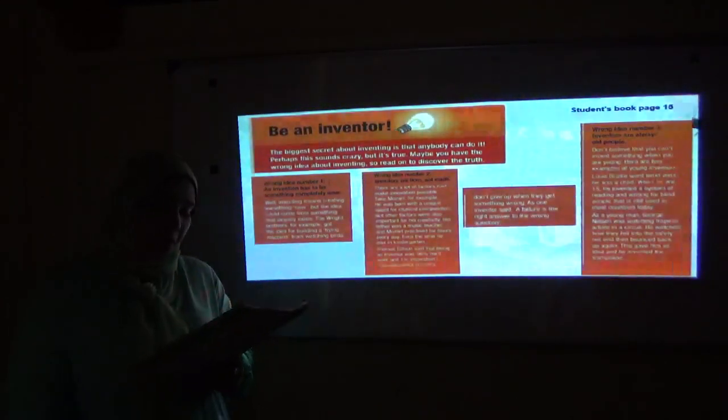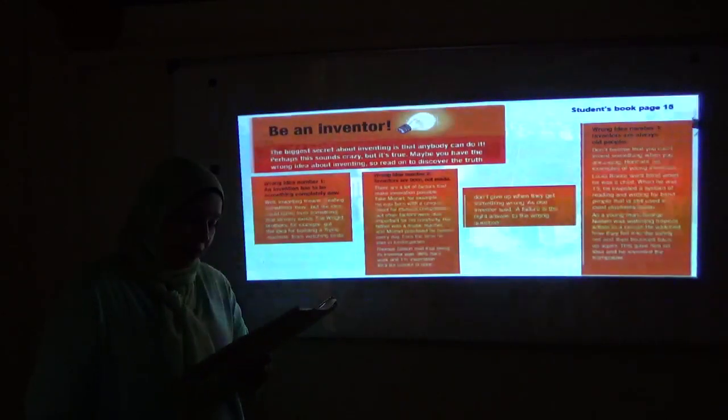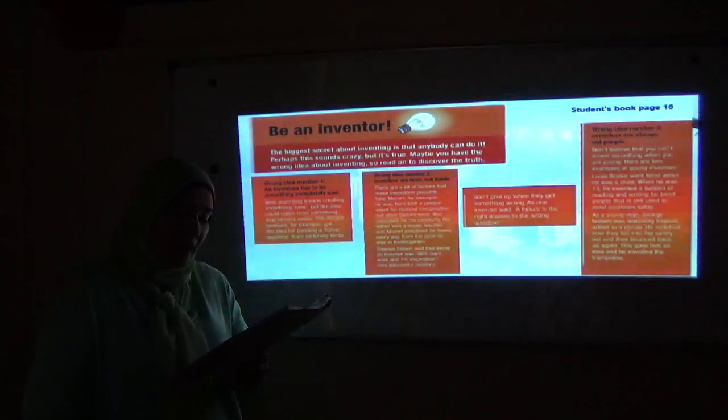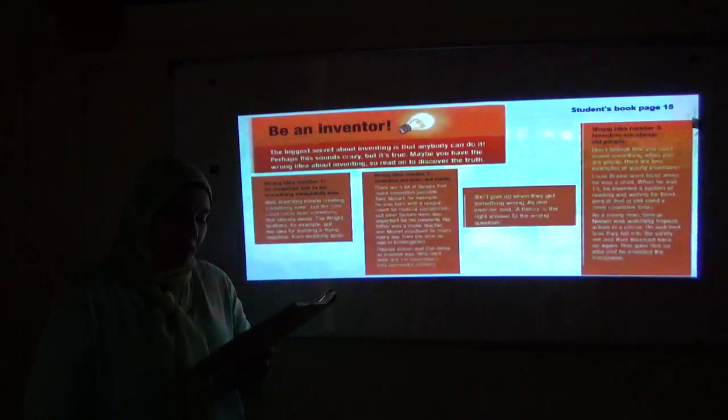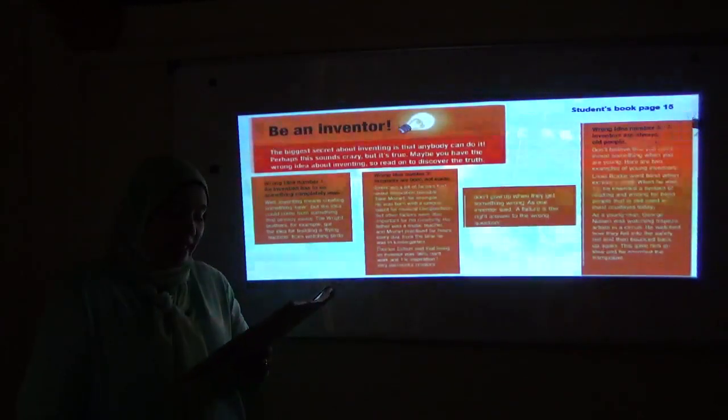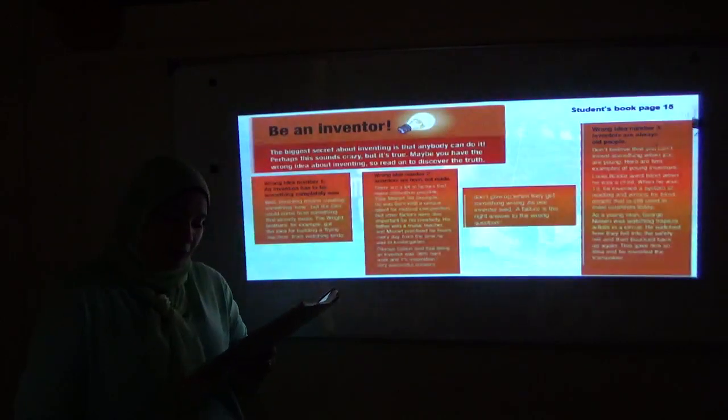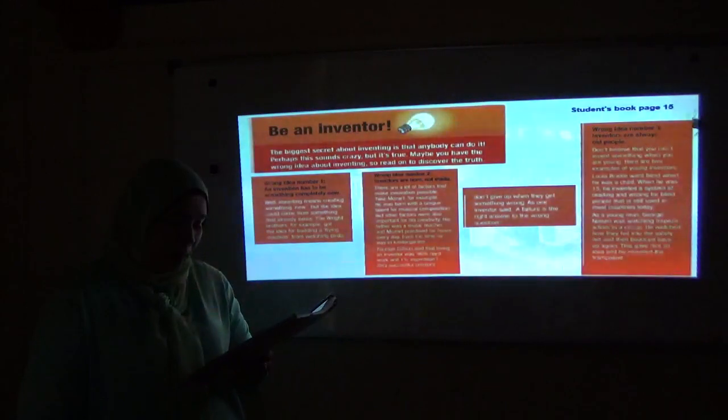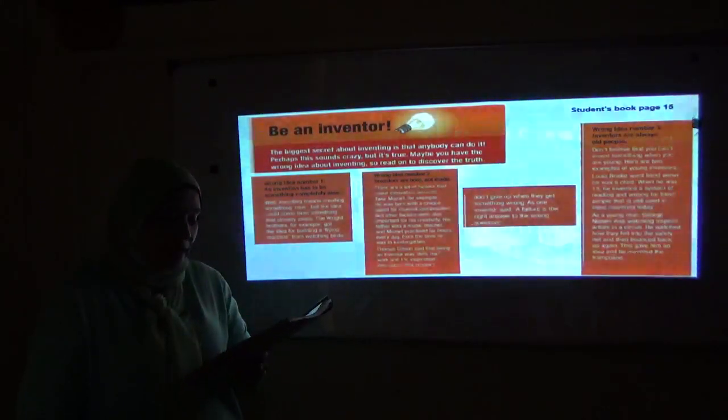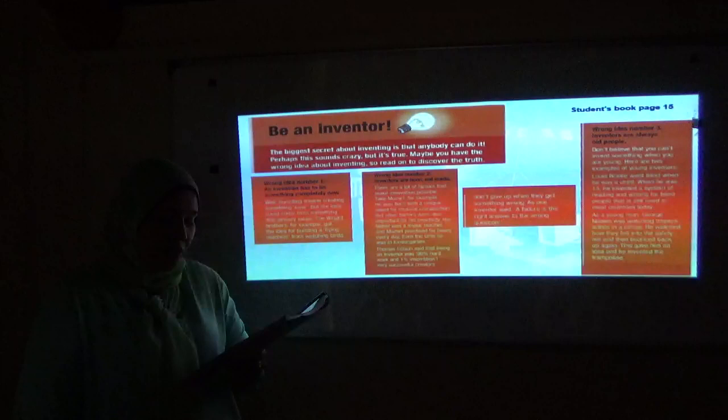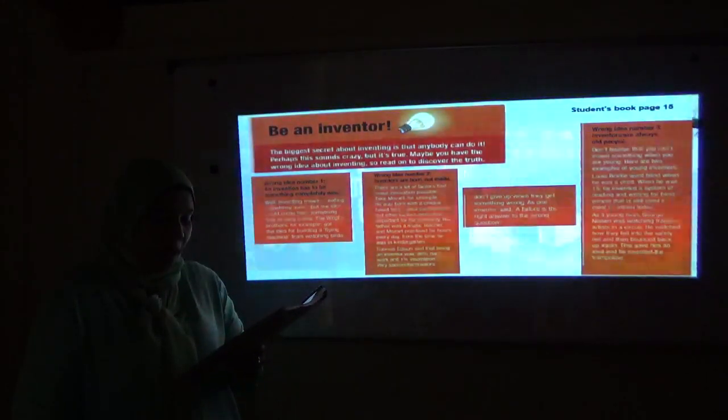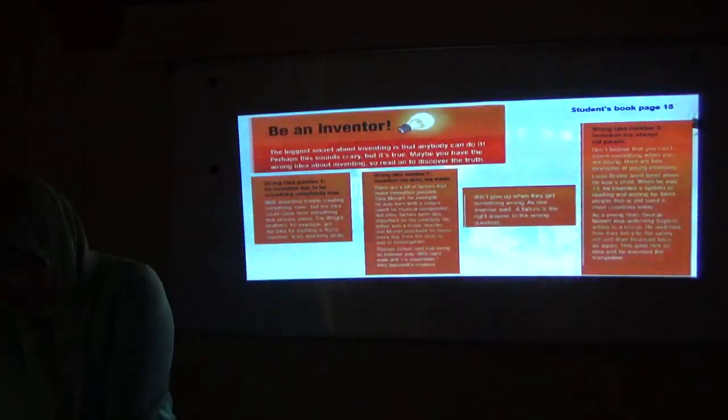Wrong idea number three: inventors are always old people. Don't believe that you can't invent something when you are young. Here are two examples of young inventors. Louis Braille went blind when he was a child. When he was 15, he invented a system of reading and writing for blind people that is still used in most countries today. As a young man, George Nissen was watching trapeze artists in circus. He watched how they fell into the safety net and then bounced back up again. This gave him an idea and he invented the trampoline.